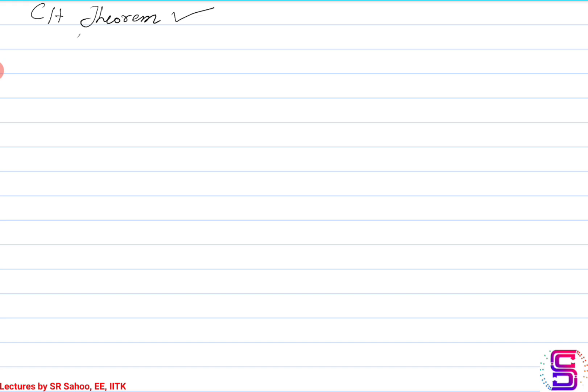In the previous lecture, we saw what the Cayley-Hamilton theorem is, and we also saw that given a function of A, I can express it as a polynomial in A with a maximum degree of n minus 1. We stop at the fact that we need to solve for these coefficients so that I can find out what F(A) is. The question is: how do we solve for these coefficients?